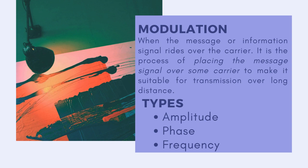Modulation is the process of placing the message signal over some carrier to make it suitable for transmission over long distances. Modulation is of three types: amplitude modulation, phase modulation, and frequency modulation.